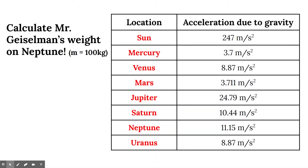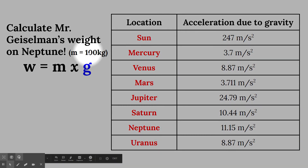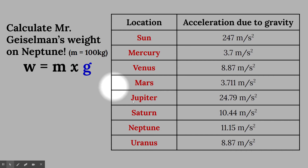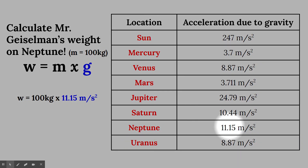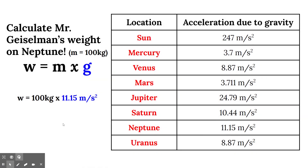I have a mass of 100 kilograms. Using the equation weight equals mass times acceleration due to gravity, take my mass, substitute it into the problem, and find the acceleration due to gravity for Neptune and solve. Neptune has an acceleration due to gravity of 11.15 meters per second squared. Plugging it in and multiplying by my mass, you get that my weight on Neptune is 1,115 newtons.